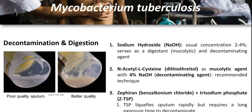For decontamination and digestion: first, sodium hydroxide at the usual concentration of 2–4% serves as a digestant/mucolytic and decontaminating agent. The recommended technique is N-acetyl-L-cysteine (NALC) or dithiothreitol as a mucolytic agent combined with 4% sodium hydroxide as the decontaminating agent. Lastly, zephiran (benzalkonium chloride) plus trisodium phosphate can be used: trisodium phosphate liquefies sputum rapidly but requires a long exposure time to decontaminate, while zephiran shortens the exposure time.